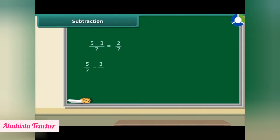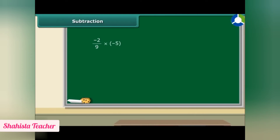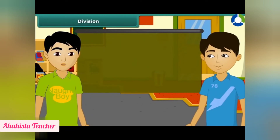If denominators are not the same for subtraction, we find the LCM, convert to equivalent rational numbers with that LCM as denominator, then subtract. For multiplication, when multiplying a rational number by a positive integer, we multiply the numerator by that integer keeping the denominator unchanged. When multiplying two rational numbers, we multiply the numerators together and the denominators together. Before division, we need to understand reciprocals.